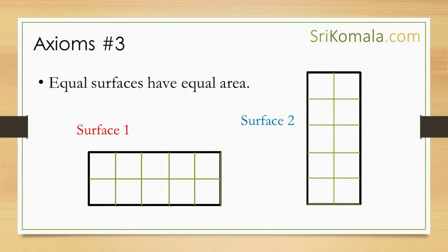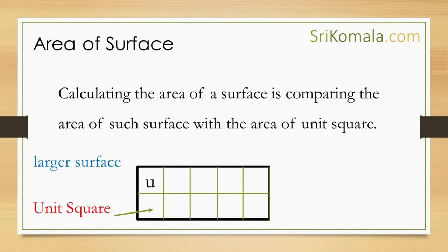Axiom number 3: equal surfaces have equal areas. As can be understood from the diagram, the 2 rectangles shown here are the same rectangle, despite the fact that the 2 rectangles face different directions. Thus, the 2 rectangles have the same area. As can be understood from the 3 axioms, calculating the area of a surface is actually comparing the area of such surface with the area of a unit square. This can be understood from the figure.